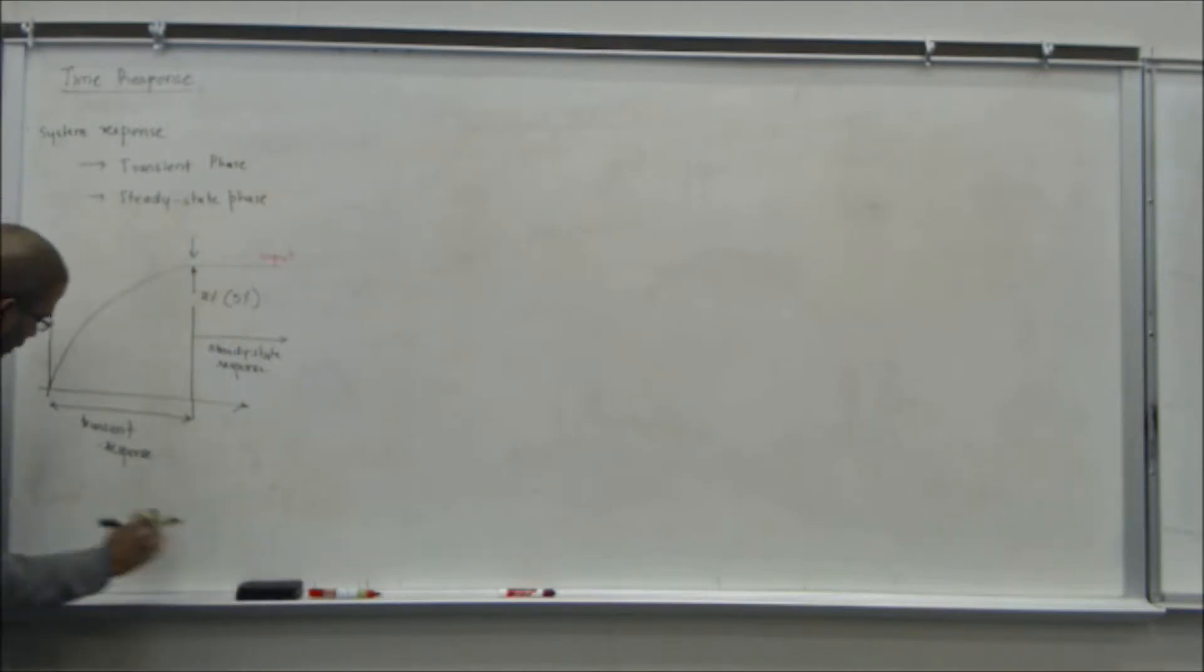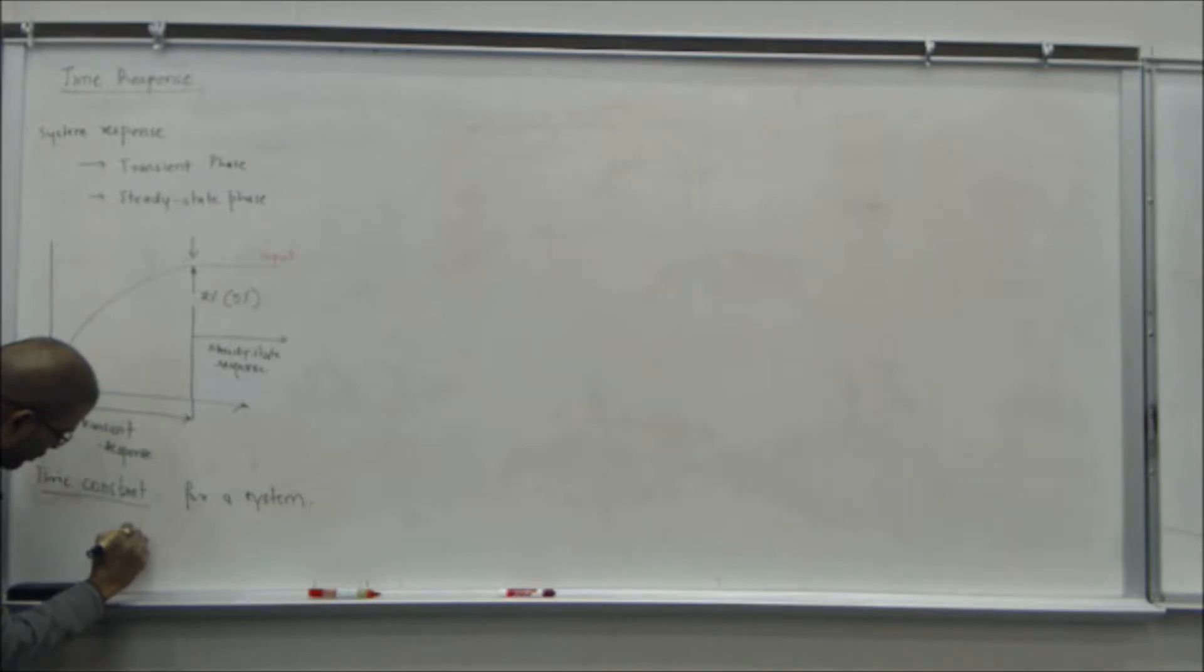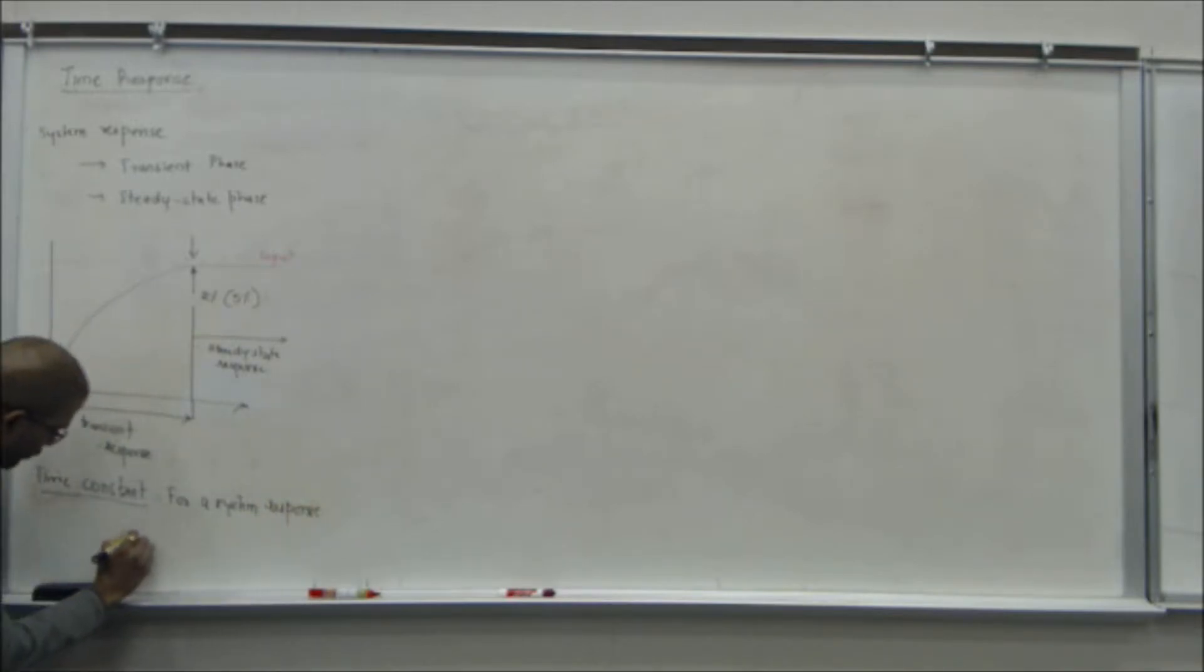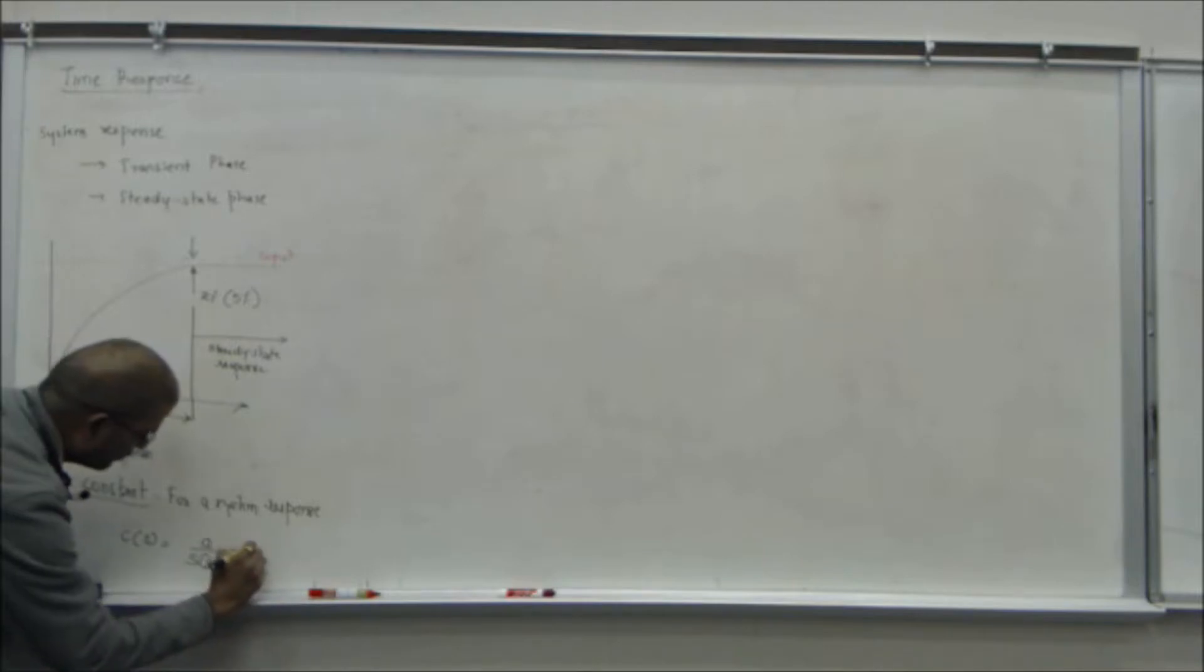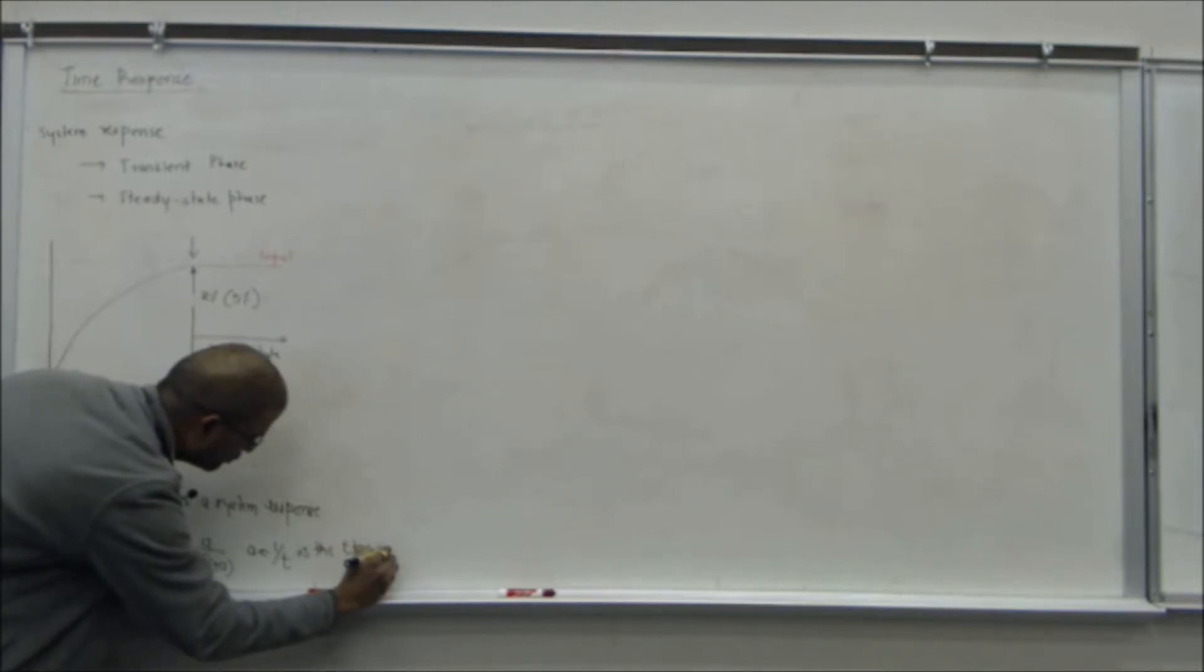What we have been discussing are these characteristics, mostly. We defined time constant last time. Time constant is just B. If you have a system like this, for a system response C(S) equal to A into S plus A, A equal to 1 over T, 1 over T is the time constant.